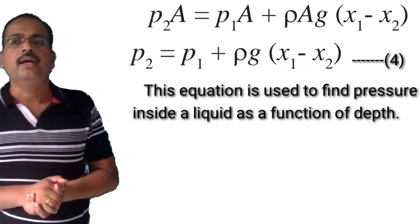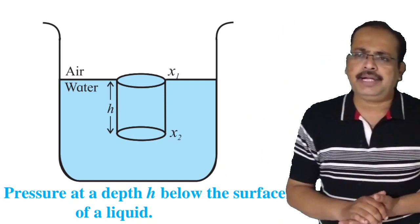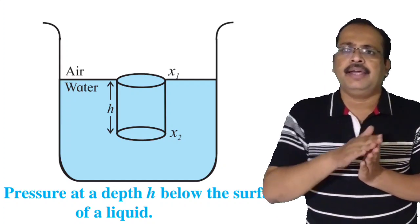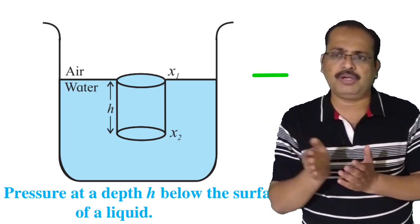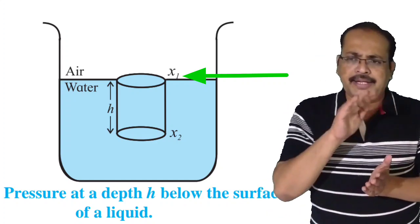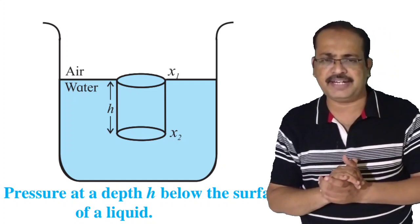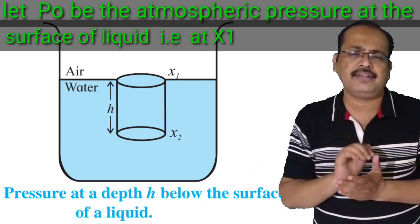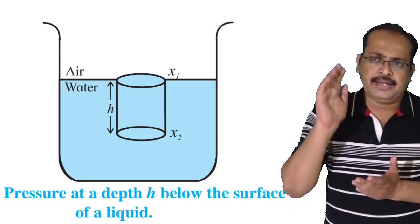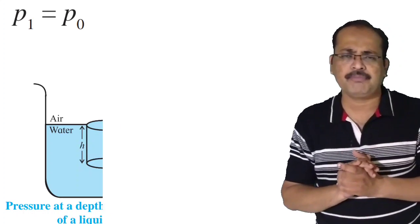Equation 4 gives pressure inside a liquid as a function of depth below the liquid surface. To find pressure P at a depth h below the liquid surface, let the top of an imaginary cylinder be at the surface of the liquid — this level is called X1. Let X2 be a point at depth h below the liquid surface. Let P0 be the atmospheric pressure at the surface, that is at X1. Therefore we write P1 is equal to P0.